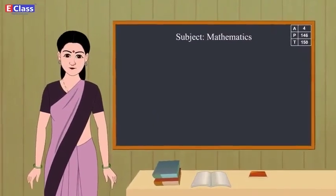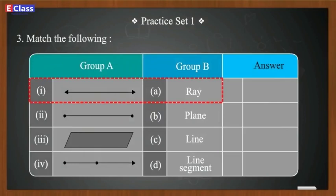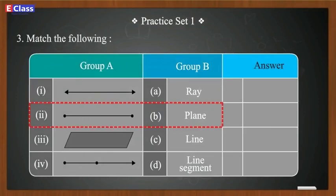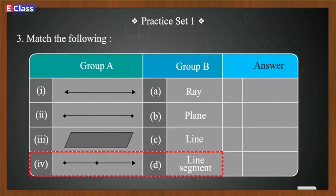Students, let's solve question three of practice set 1.1 — match the following. Group A diagram one matches group B (a) ray. Group A diagram two matches group B (b) plane. Group A diagram three matches group B (c) line. Group A diagram four matches group B (d) line segment.